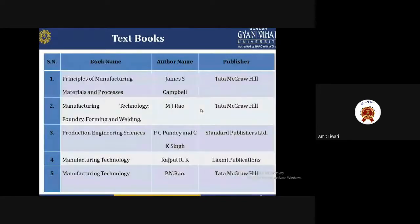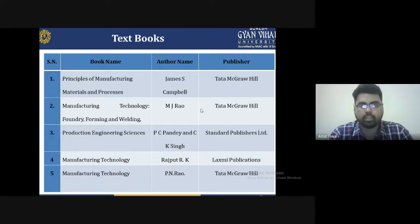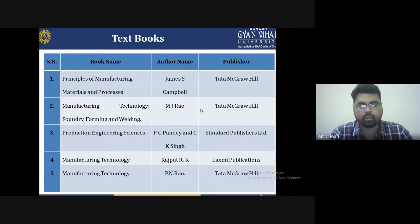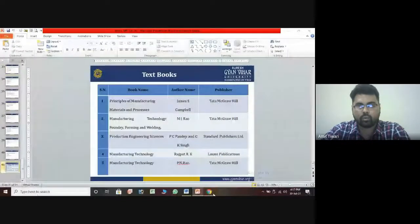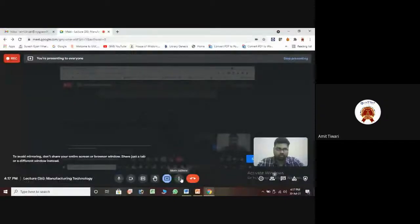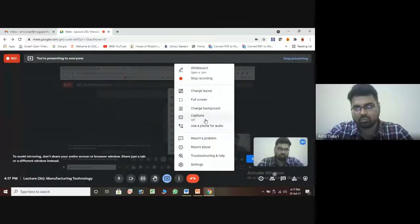At the end of the lecture, recommended books include: Principles of Manufacturing Materials and Processes by James E. Campbell (Tata McGraw-Hill); Manufacturing Technology: Forming, Bonding and Welding by M.J. Rowe (Tata McGraw-Hill); Production Engineering Science by P.C. Pandey and G.K. Singh; Manufacturing Technology by R.K. Rajput (Laxmi Publications); and Manufacturing Technology by P.N. Rao (Tata McGraw-Hill). Thank you for watching this lecture series.